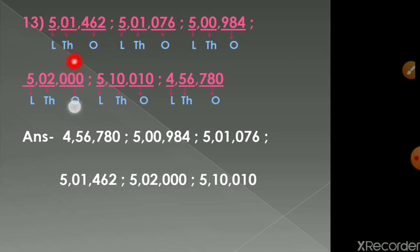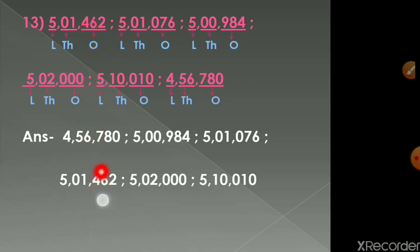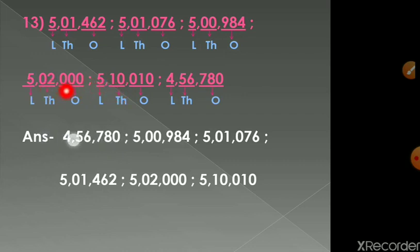Comparing the remaining four numbers, in the thousands place we have 01, 01, 02, and 10. Since 01 appears twice, compare those two: 501462 versus 501076 — 501076 is less. So the third number is 501076 and the fourth is 501462. The remaining two have 02 and 10: since 02 is less than 10, the fifth is 502000 and the sixth is 510000.